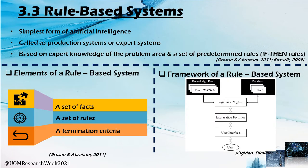A rule-based system is the simplest form of artificial intelligence. It is based on expert knowledge of the specific problem area. A rule-based system contains if-then rules which express expert knowledge. It contains three types of elements: a database which contains a set of facts; a knowledge base which contains a set of rules and termination criteria for each if-then rule to stop creating infinite loops; and an inference engine which links the database and knowledge base, along with an explanation facility and user interface.